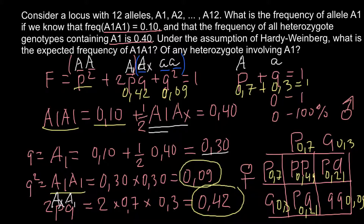We can use a Punnett square to find the frequency of different genotypes — when we know the frequency of each allele, we can build a Punnett square and find not only all possible genotypes but also their frequencies. That's all for today. Thank you for your attention. Please subscribe, thumbs up if you liked the video, write your comments and ask questions. See you in the next video, goodbye.